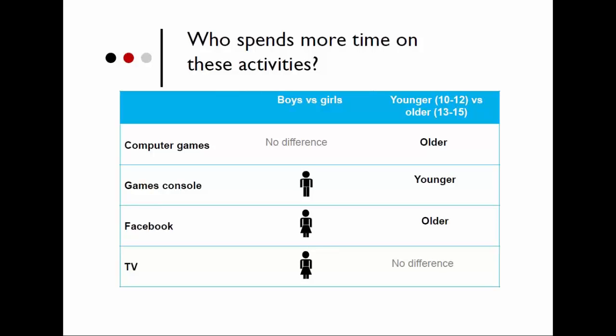First we looked at who spends more time on these activities — whether boys or girls, and younger or older adolescents. There is no difference in computer games between genders, however older adolescents aged 13 to 15 play more computer games than those aged 10 to 12. Boys play more games on a console than girls, and younger people play on a games console more than older ones. Girls tend to watch television and chat on social networking sites more than boys. Older adolescents use social networking sites more than younger ones — not surprising since some sites have age limits. There are no differences by age for watching television.